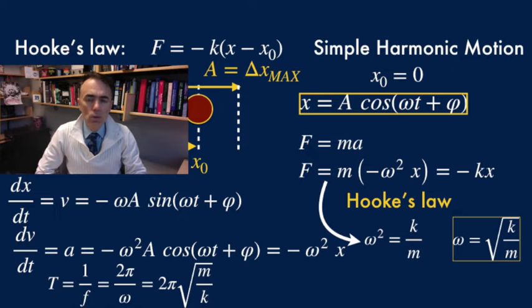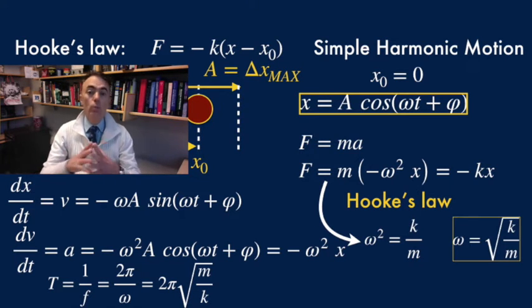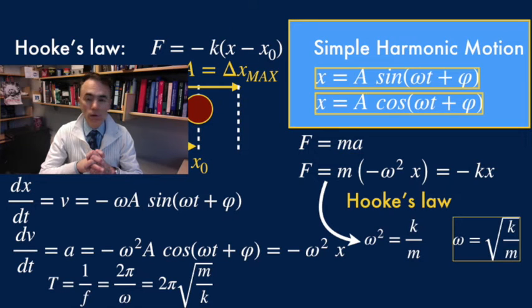This simple harmonic motion is a very specific kind of periodic motion. But not all periodic motion is simple harmonic motion. Only if it can be described by a sine or a cosine function. The oscillatory motion of the spring is a clear example.